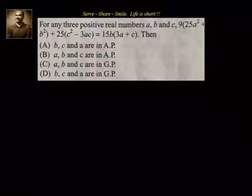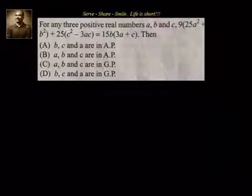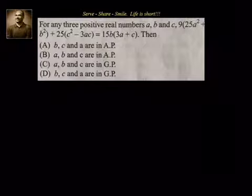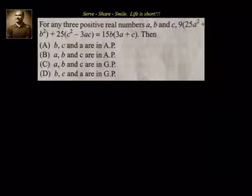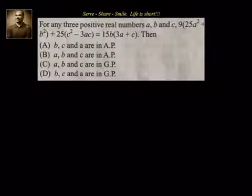We have to simplify and find out whether a, b, c or b, c, a are in AP or GP respectively. To solve this problem, we will first try to simplify the given equation. We see there are squares — a², b², c² — so we will check whether this fits into any known algebraic identity. If it fits, we should be able to find which option is correct.